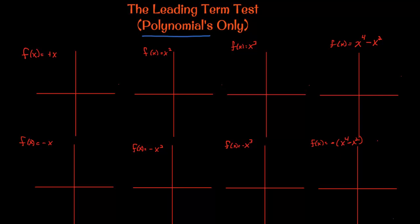When doing that, let's make sure we recognize that for f(x) = x, we're going to start down in quadrant three and then extend out positively to quadrant one. The negation of x means we rotate or flip this graph about the x-axis, so we start up in quadrant two and come down to quadrant four. That's a linear graph most of us have seen before.